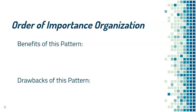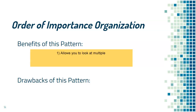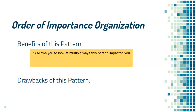Well, the first benefit is it allows you to look at multiple ways this person impacted you. I'm talking about my grandmother's physical and mental strength — two different categories of how she impacted me. Granted, they both have to do with strength, but I could talk about how she helped me understand how to be a good person when people are looking, but more importantly, when people aren't looking. So in general, I can cover more things and I just have to put them in the right order.